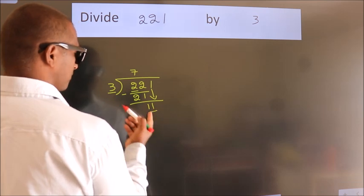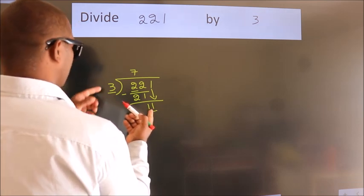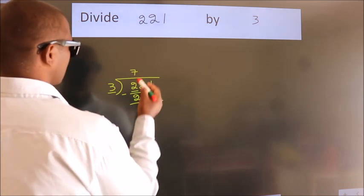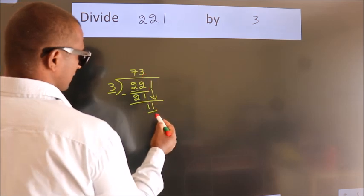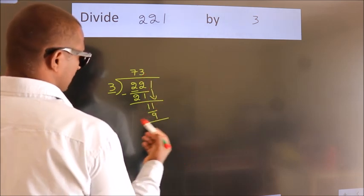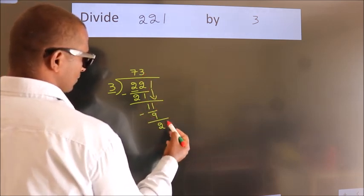So, 11. A number close to 11 in the 3 table is 3 times 3, which is 9. Now we subtract. We get 2.